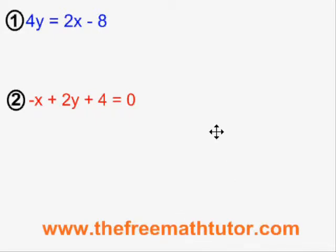So the first thing I'm going to do when given this system of two equations is I'm going to set up my comparison, which involves isolating the same variable in both equations. I will start with the blue equation on top, and I will isolate the y simply by dividing the entire equation by 4. y is equal to 2x minus 8, all divided by 4.